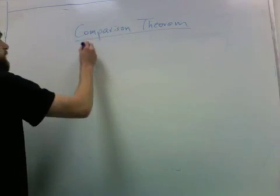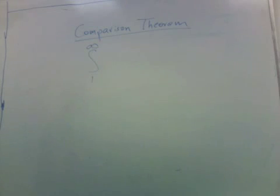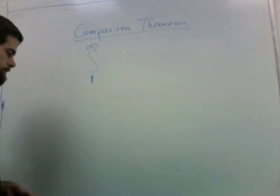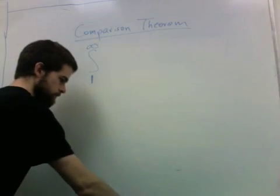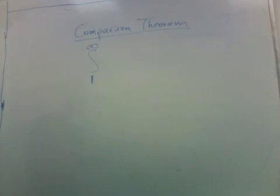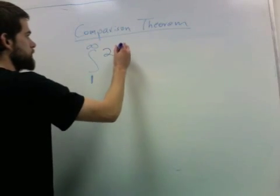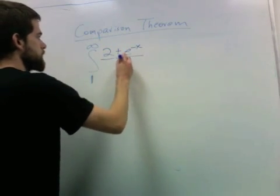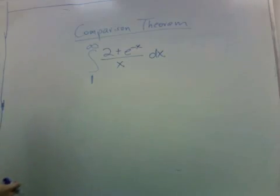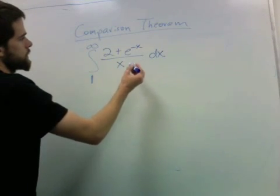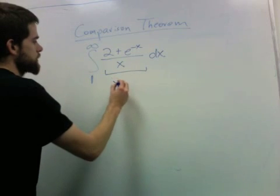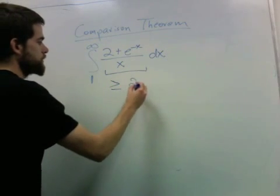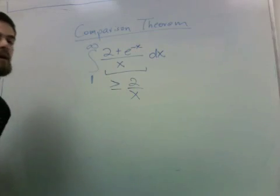Say we're looking at integral from 1 to infinity of 2 plus e to the minus x over x. We probably could figure this one out explicitly, but there's really no point because the inside is bigger than 2 over x. I'm just throwing away the e to the minus x part.